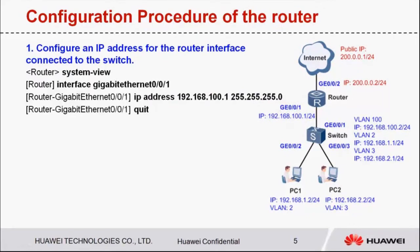Let's see the configuration procedure of the router. There are five steps. Step 1: Configure an IP address for the interface connected to the switch. The IP address is the next hop address of the switch's default route.